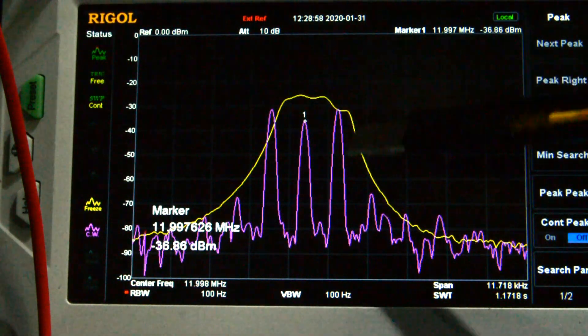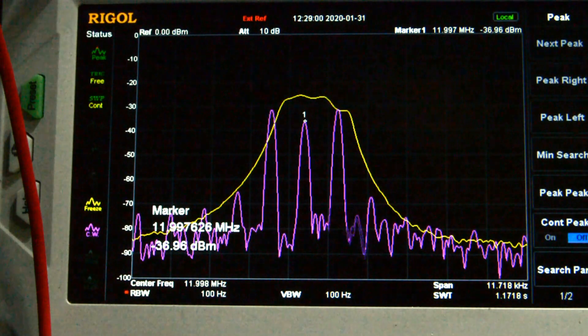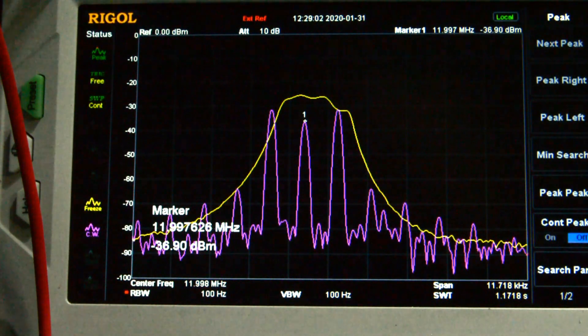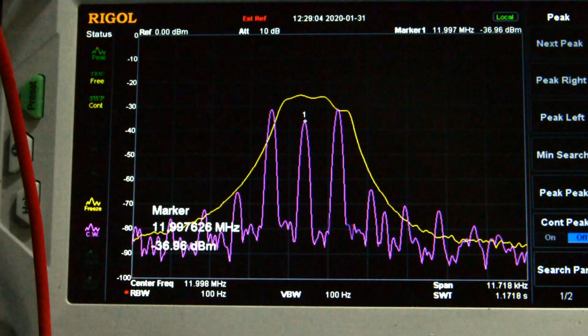This is the lower sideband, this is the upper sideband, so this is an AM transmission. This is exactly what an AM signal looks like.